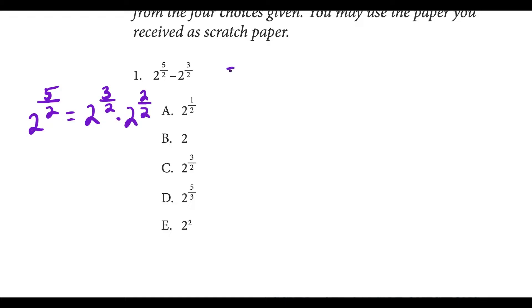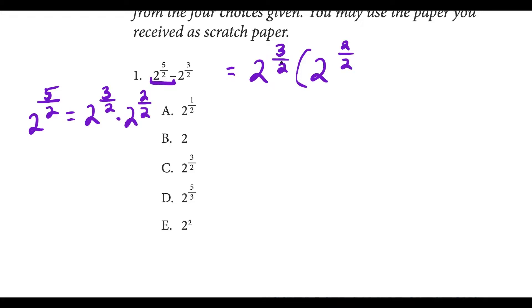The reason why I'm doing this is that it's going to allow us to factor this expression. We could take out a 2 to the 3 halves, and that tells us that on the leading term, we're going to be left with 2 to the 2 over 2. Notice 2 to the 3 halves times 2 to the 2 halves equals 2 to the 5 halves. And if we factor out 2 to the 3 halves on the second term, we're going to be left with 1.